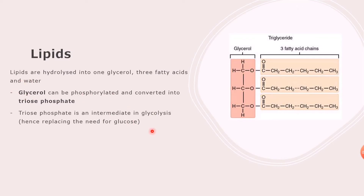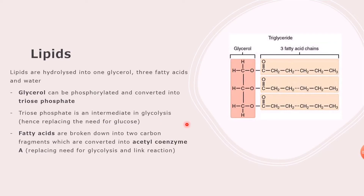The fatty acids can be broken down into two-carbon fragments. These two-carbon fragments are converted into acetyl coenzyme A. This replaces the need for glycolysis and the link reaction, because acetyl coenzyme A is the final product of the link reaction and the reactant of the Krebs cycle. So fatty acids can be fed straight into the Krebs cycle.